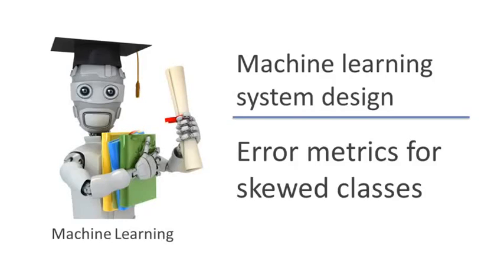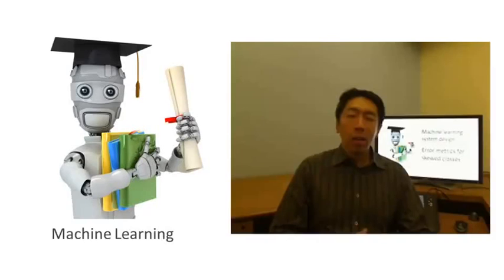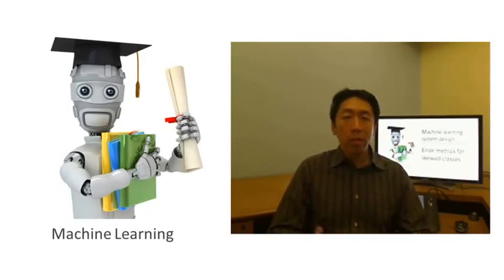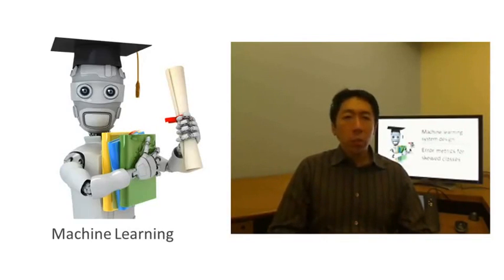In the previous video, I talked about error analysis and the importance of having error metrics — that is, having a single number evaluation metric for your learning algorithm to tell how well it's doing. In the context of evaluation and error metrics, there's one important case where it's particularly tricky to come up with an appropriate evaluation metric: the case of skewed classes.